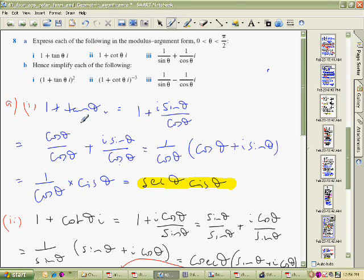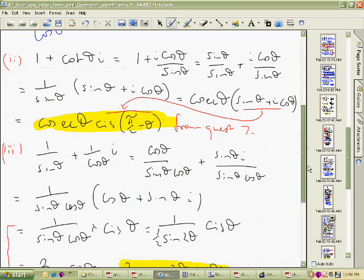What's that? That's cisθ, isn't it? So I can pull this out the front 1 over cos. This, I've ended up with 1 over cos, cisθ. And 1 over cos is just secθ. So that's the sort of thing that we're looking for as we move through here.